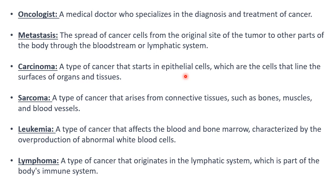Carcinoma is a type of cancer that starts in epithelial cells — the cells that line the surface of your organs and tissues. Sarcoma is a type of cancer that arises from connective tissues, such as bones, muscles, and blood vessels. Leukemia is a type of cancer that affects bone and bone marrow, characterized by overproduction of abnormal white blood cells.